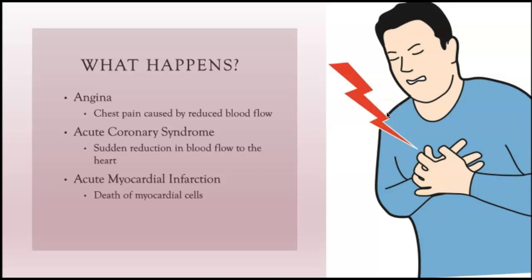We'll discuss three things that can happen when blood flow to the heart muscle is impaired. First is angina, which is chest pain caused by reduced blood flow to the heart muscle. If a patient has trauma to the chest — maybe they're in a car accident — that would not be referred to as angina. Angina specifically means chest pain caused by a reduction in blood flow to the heart muscle.